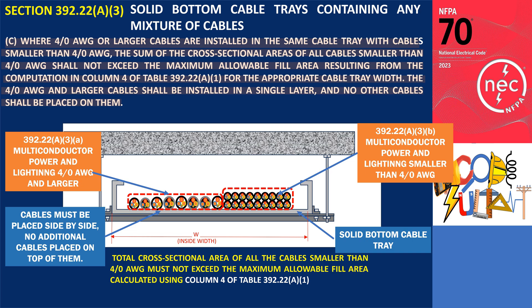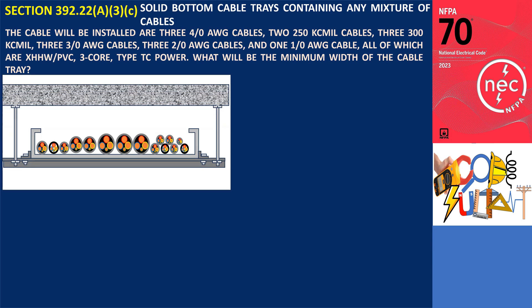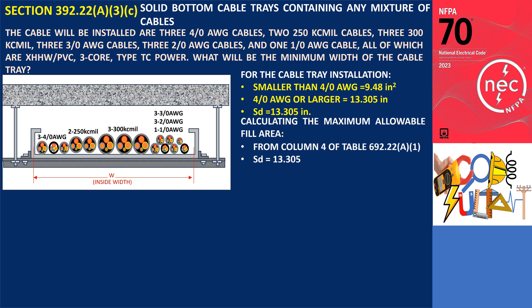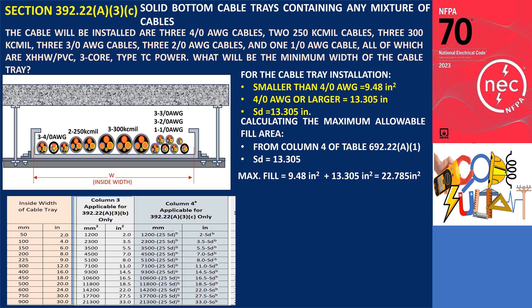To understand this, let's combine the two previous examples. Since we calculated the total width of the 4-aught AWG and larger cables and the total cross-sectional area of multi-conductor cables smaller than 4-aught AWG, we can now determine the minimum inside width of the cable tray. Cables smaller than 4-aught AWG have a total cross-sectional area of 9.48 square inches. For cables that are 4-aught AWG or larger, the total overall diameter is 13.305 inches, which we designate as SD as per Column 4 of the table. Adding the 9.48 square inches from the smaller cables to SD, the total fill area comes to 13.305 plus 9.48, equaling 22.785 square inches.